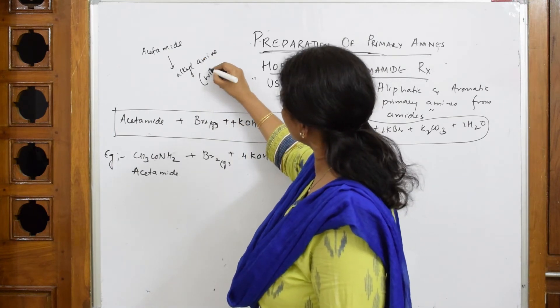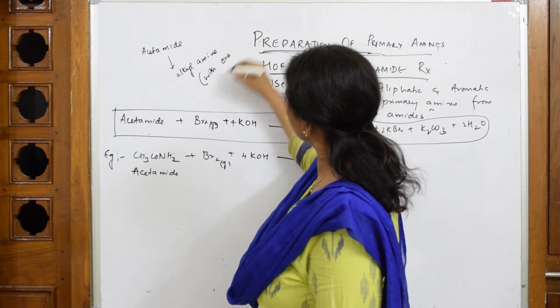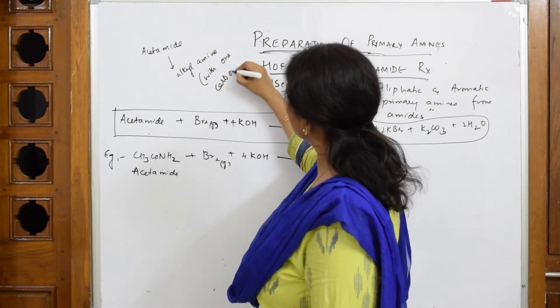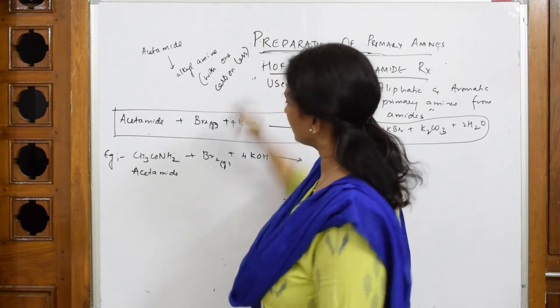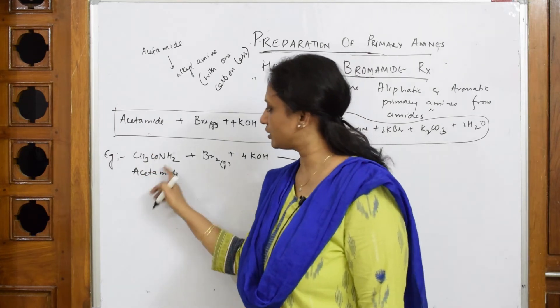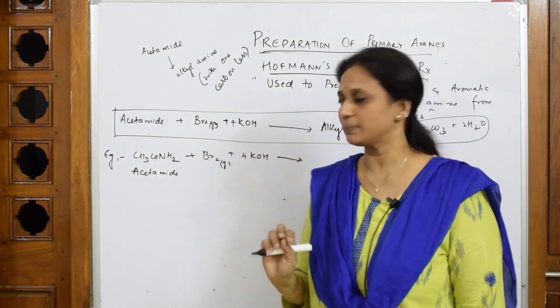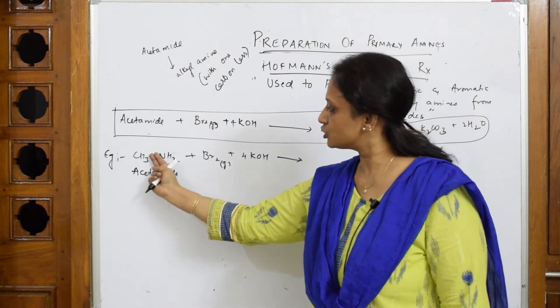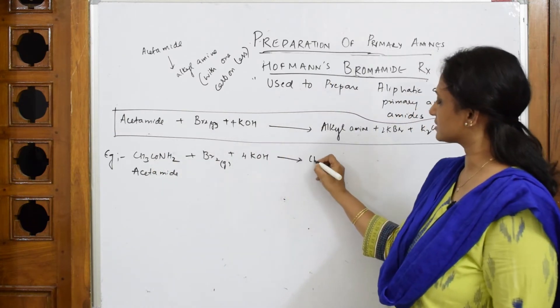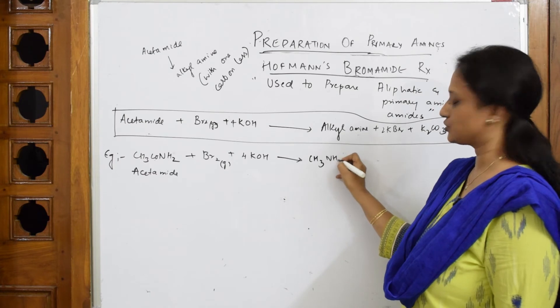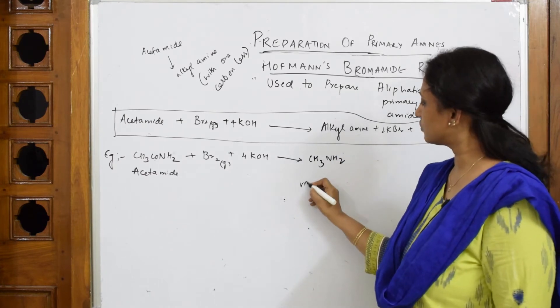Acetamide to alkyl amine with one carbon less, this is very important. Don't blindly write carbon less. When you see amide, don't reduce it blindly. One carbon less amine should be prepared. How many carbons you have? Two. Take out one, this will become CH3NH2.